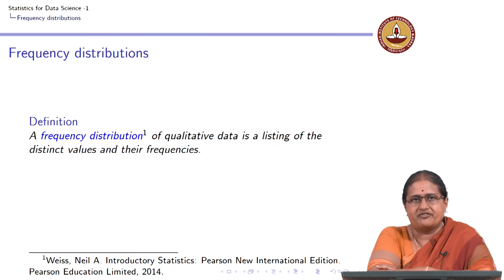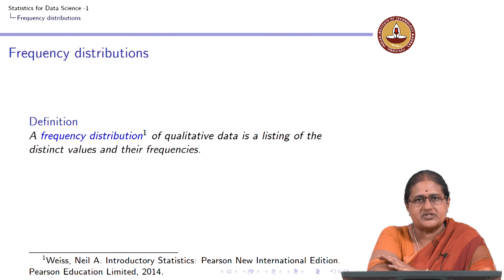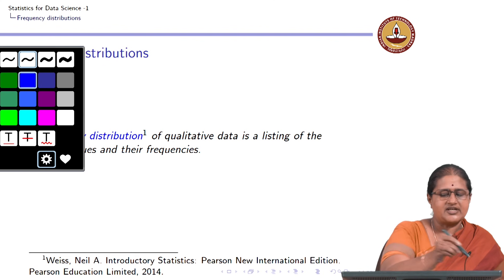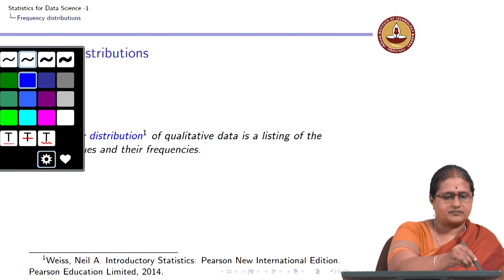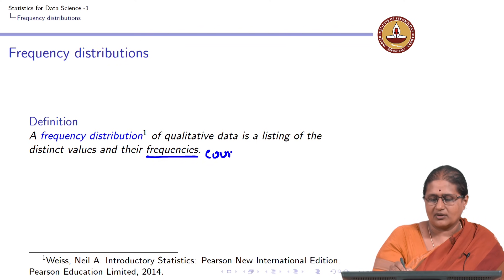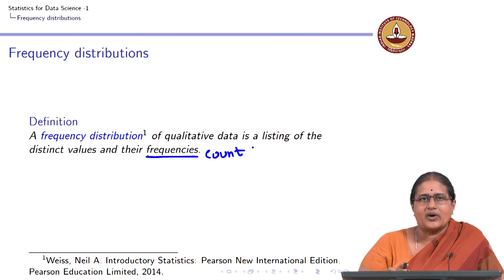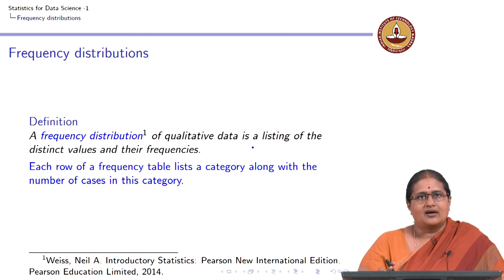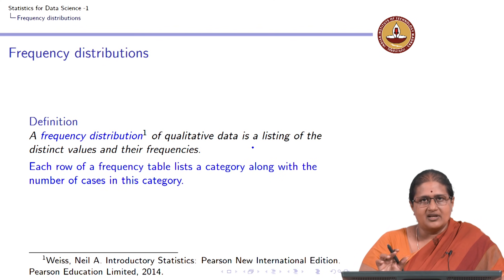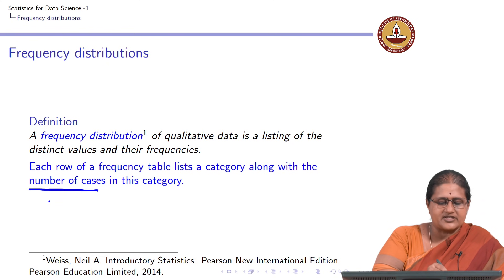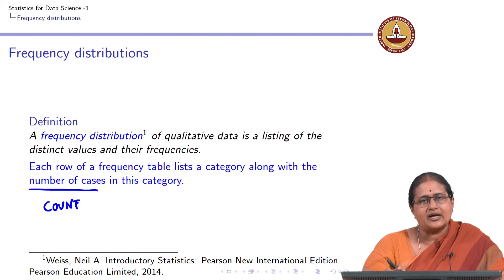A frequency distribution is a listing of distinct values and their frequencies. Frequency is nothing but the count. By distinct values, we mean the distinct values the categorical variable actually takes. Each row of a frequency table lists a category along with the number of cases or count of cases — that is, how many of that particular case exist in that particular category.